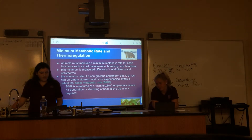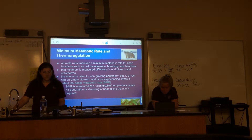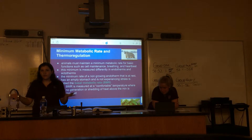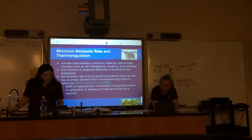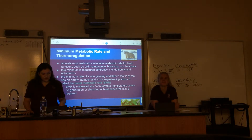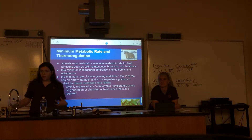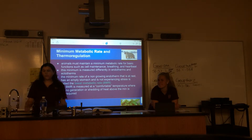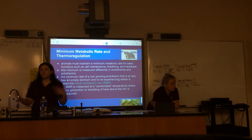Animals must maintain a minimum metabolic rate for basic functions such as cell maintenance, breathing, and heartbeat — even if doing nothing else, some energy is still being used. This minimum is measured differently in endotherms and ectotherms. Endotherms are warm-bodied animals and ectotherms are cold-blooded animals, so their metabolic rates differ because their homeostatic processes are different.